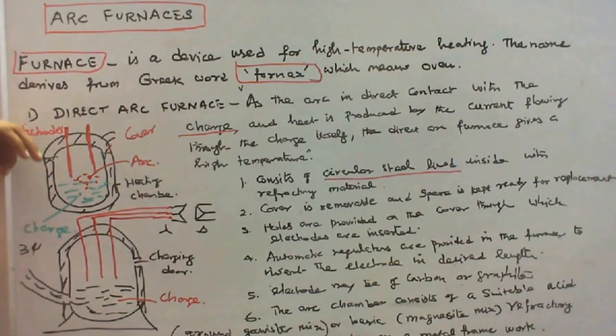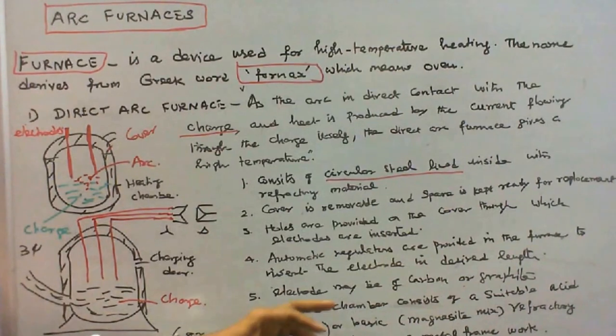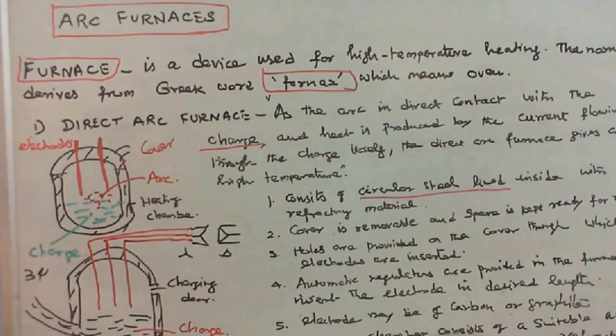Automatic regulators are also provided in the furnace to insert the electrodes in a desired length. Electrodes may be of carbon or graphite. The arc chamber consists of a suitable acid, ground gannister mix, or basic magnetite mixed refractory lining supported on a metal framework.